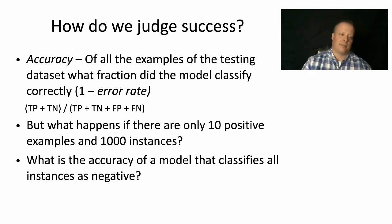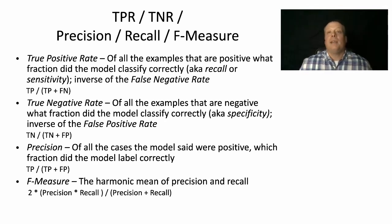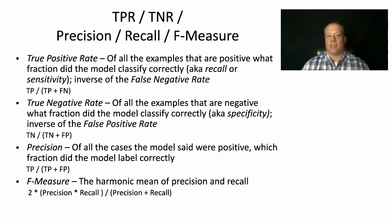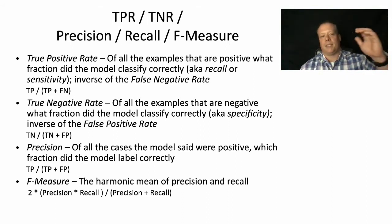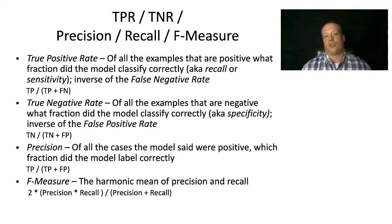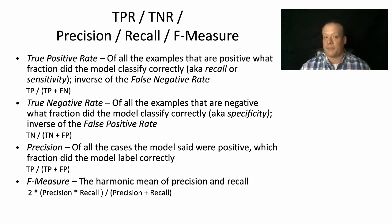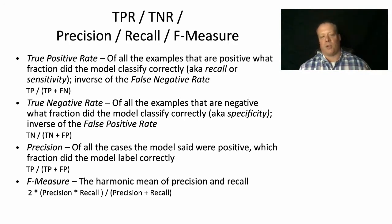Because class imbalance is often the case, we use additional ways of measuring model performance. One approach is to calculate the true positive rate and true negative rate separately. The true positive rate — of all examples that are positive, what fraction did the model classify correctly — is sometimes called recall or sensitivity. It is the inverse of the false negative rate: true positives divided by (true positives plus false negatives). The true negative rate — of all examples that are negative, what fraction did the model classify correctly — is also known as specificity, and is the inverse of the false positive rate: true negatives divided by (true negatives plus false positives).